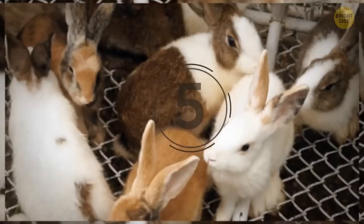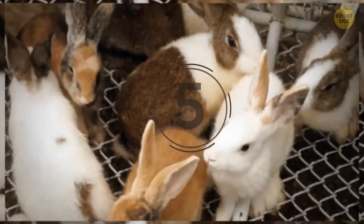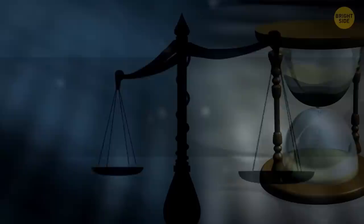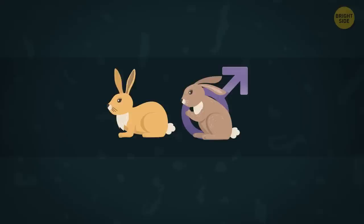Fibonacci came up with the sequence as a solution to a problem involving the growth of a population of rabbits. Let's recreate his experiment. If you put a pair of rabbits in an enclosed space, how many pairs of rabbits will you find there after a year? To solve this problem, Fibonacci proposed some conditions for his theoretical experiment. That all rabbits are born as a pair, one male, one female.